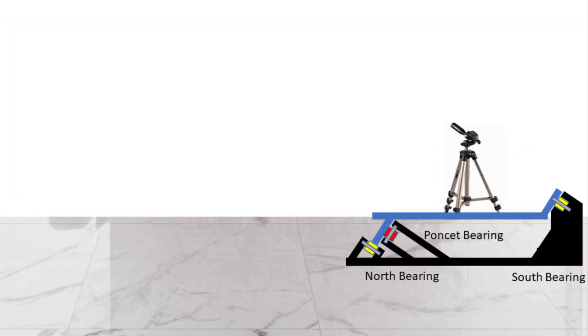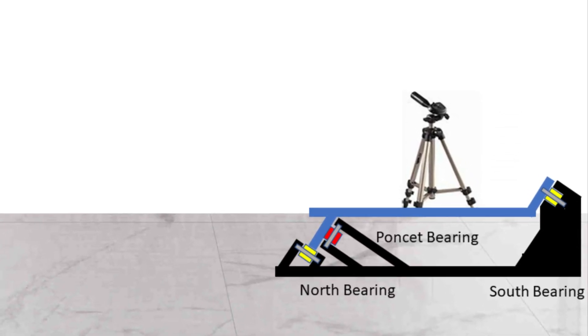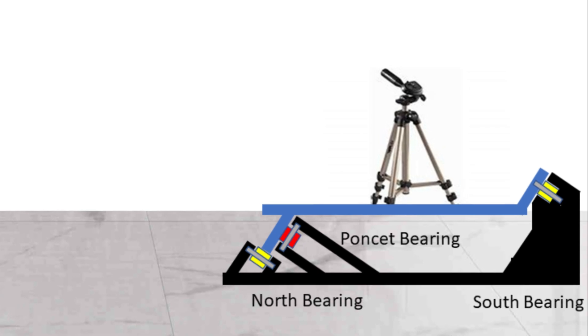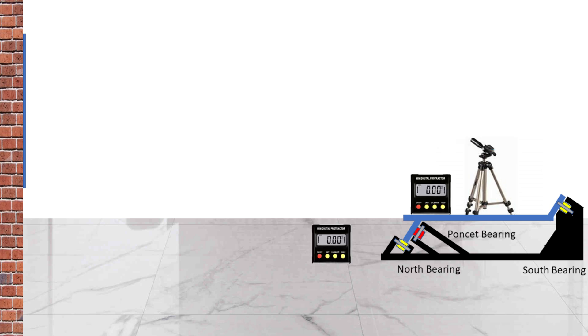In this setup we will put a tripod on top of our equatorial platform and fire a laser onto the wall, preferably at a distance of two meters or greater. Greater the distance, more accurate measurements we will have.